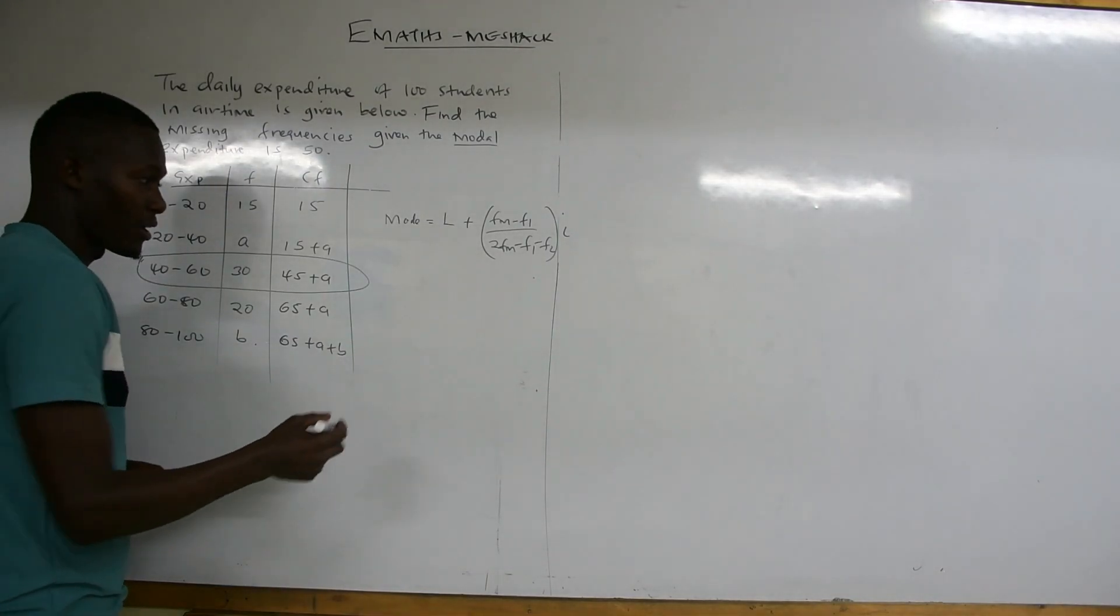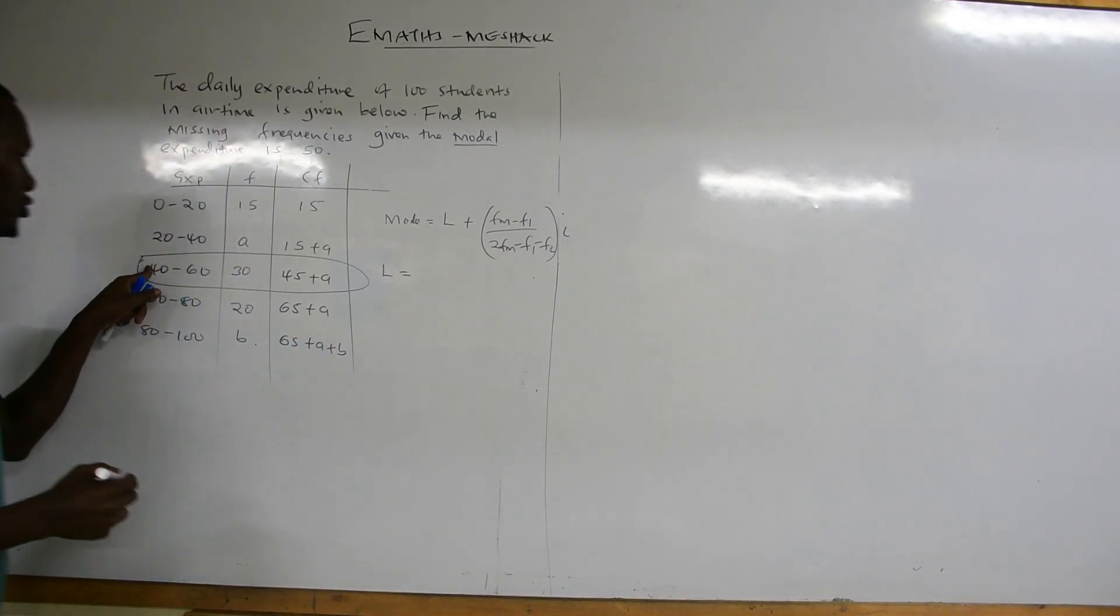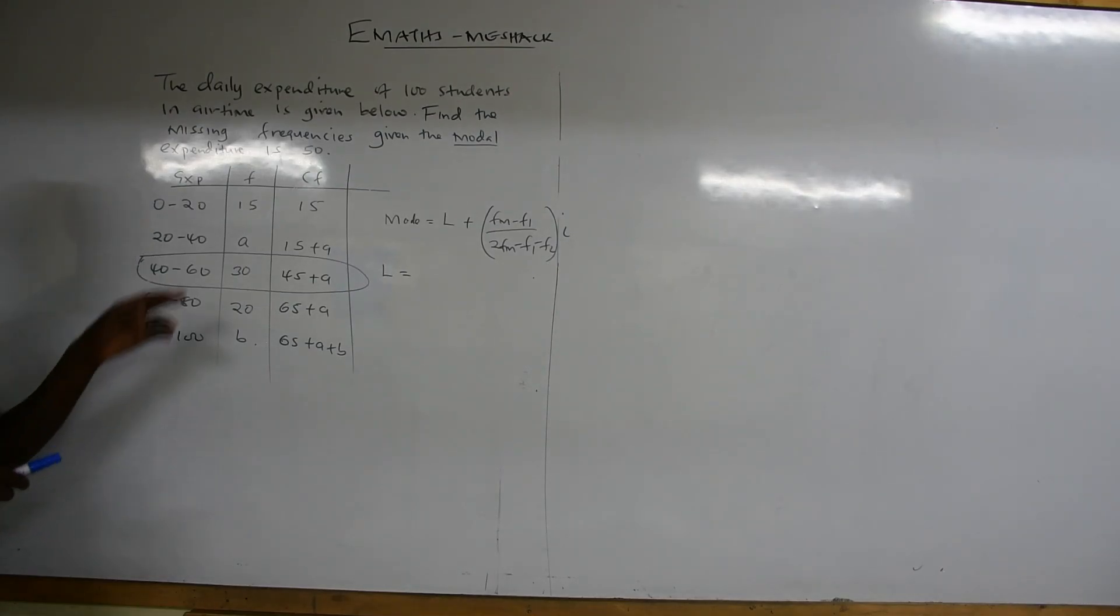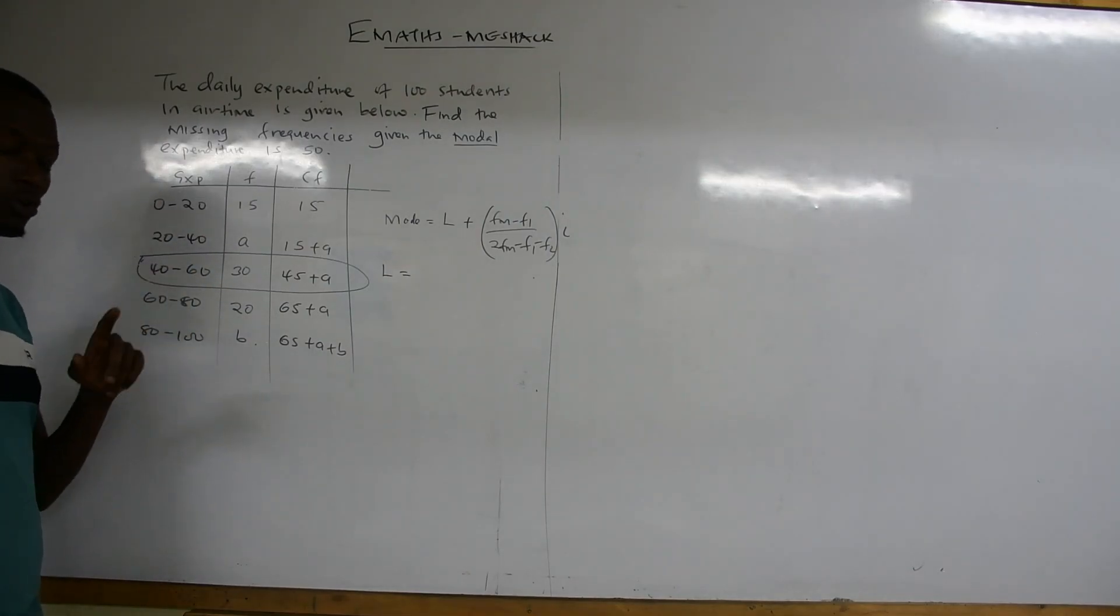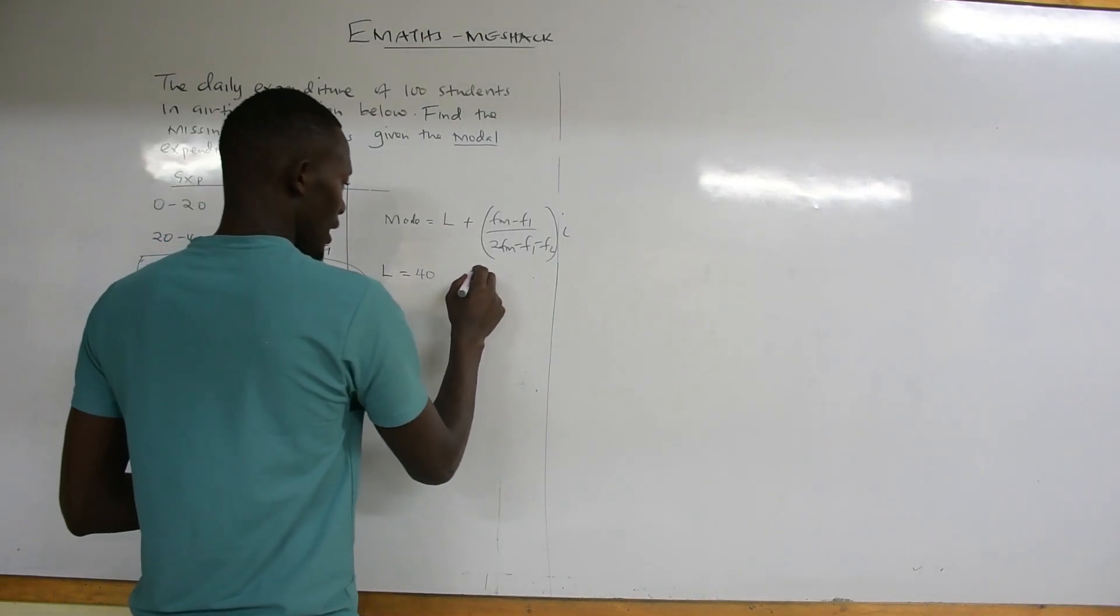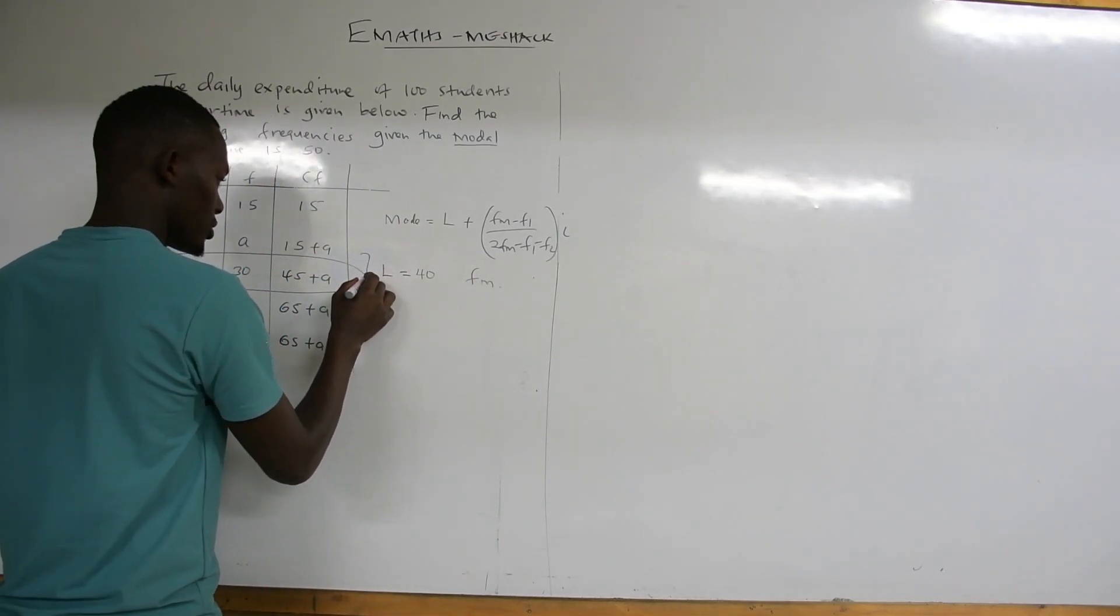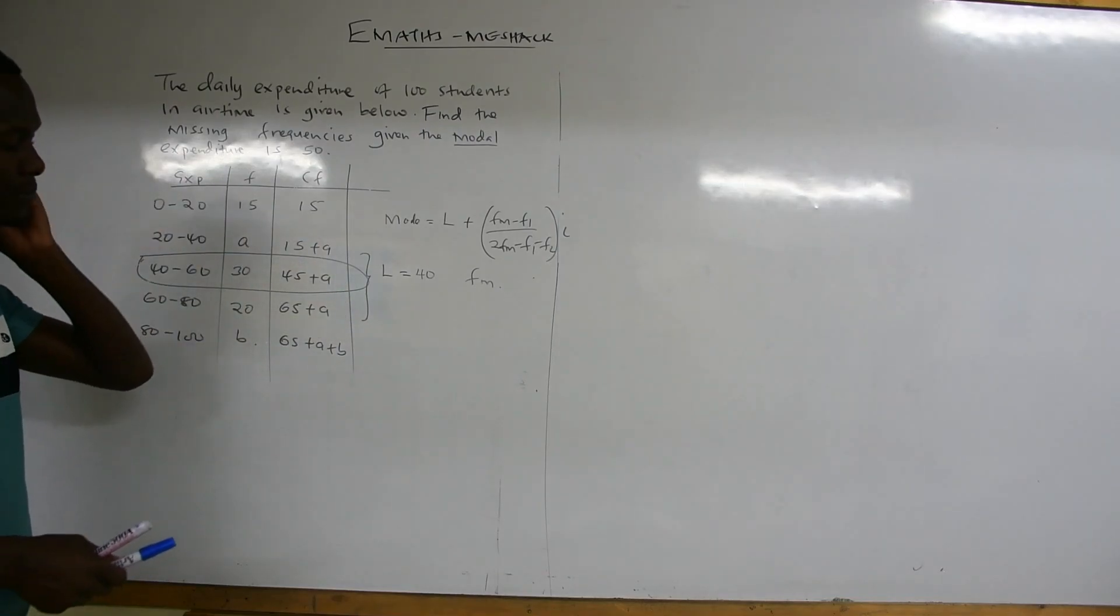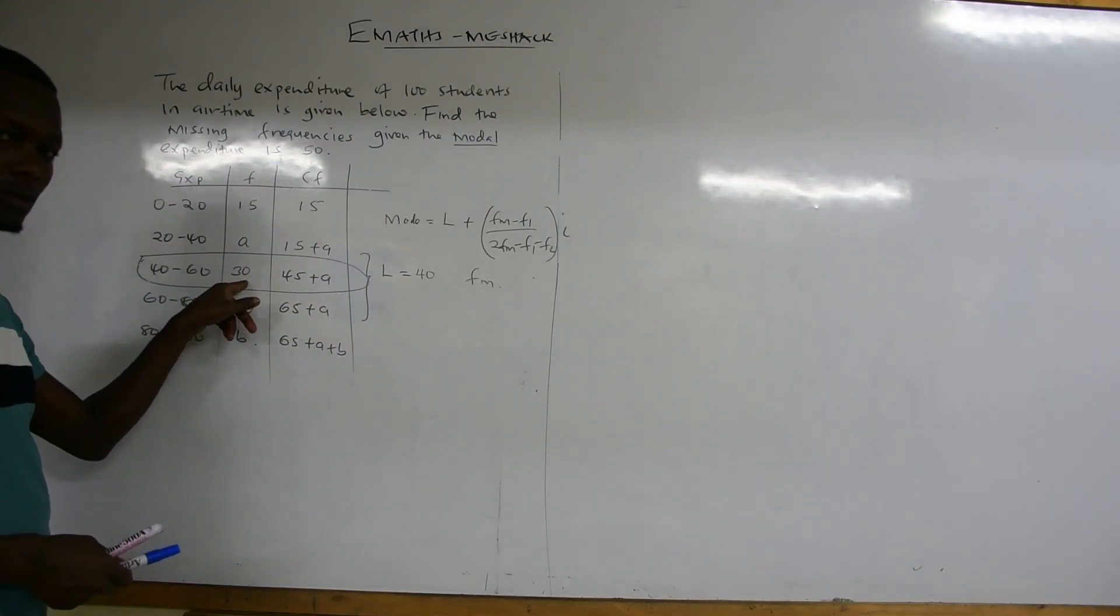We need to identify the values. Our L in this case will be 40 because this is an inclusive data. The upper and the lower are the same. But if you are not sure, just take the upper range and lower, 40 plus 40 divided by 2 will give you 40, whether the data is inclusive or exclusive. Our Fm is the frequency of the modal class, which is 30.